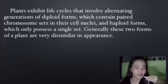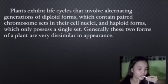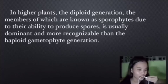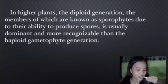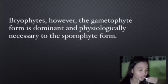Plants exhibit a life cycle that involves alternating generations of diploid forms, which contain paired chromosome sets, and haploid forms, which only possess a single set. Generally, these two forms of a plant are very similar in appearance. In higher plants, however, the gametophyte form is dominant and physiologically necessary to the sporophyte form.